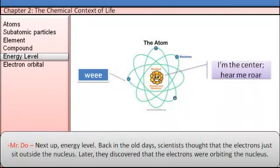Next up, energy levels. Back in the old days, scientists thought that electrons just sit outside the nucleus. Later, they discovered that the electrons were orbiting the nucleus.